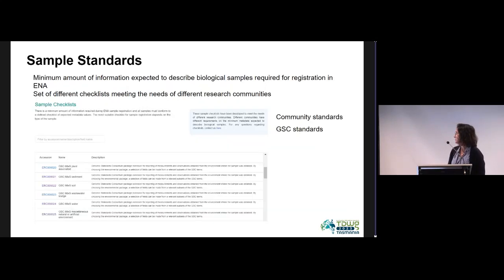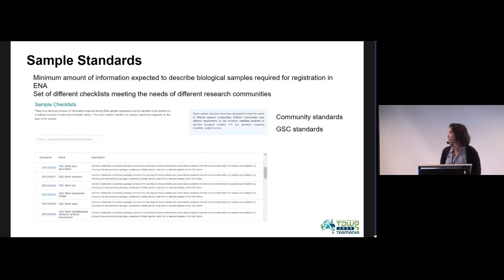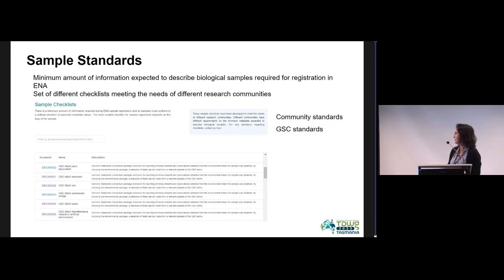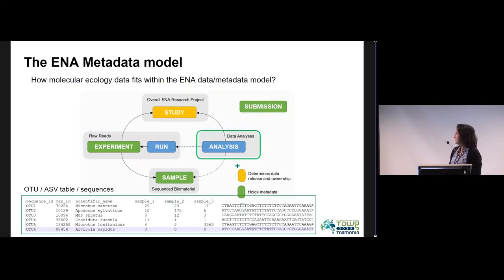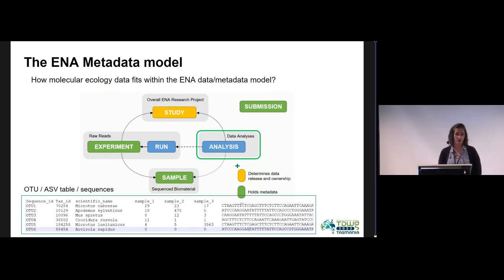Samples are characterized within our sample objects using specific checklists that describe the standards and metadata that can be associated. We base ourselves on community standards and Genomic Standards Consortium standards like the MIxS checklists, with different checklists for different types of samples. Within these checklists we have mandatory fields — the minimum information required for describing a biological sample — plus a lot of optional information that can also be submitted. The raw data goes into raw reads linked to the specific sample of origin. OTU and ASV tables are, in fact, data analysis objects — processed information.